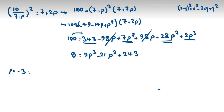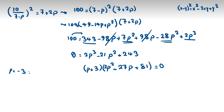Now we can factorize. One factor is p plus 3. We want to create 2p cubed, so we place 2p squared, giving 6p squared. Then minus 27p, minus 81p, then plus 81, plus 243, equals 0. So the first factor gives p equals negative 3, or the second factor 2p squared minus 27p plus 81 equals 0.